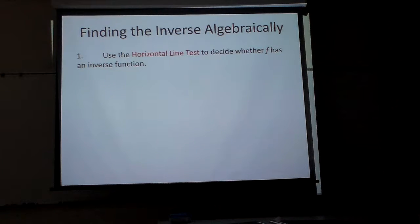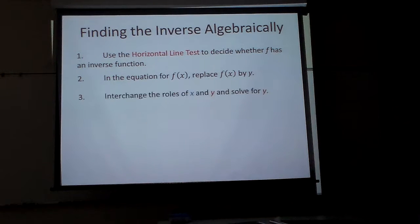First off, we have the horizontal line test to decide whether f has an inverse function. Because if it doesn't pass the horizontal line test, it does not have a function. In the equation f of x, I'm going to replace f of x with the letter y, because remember f of x is just the same thing as y. And then we interchange the roles of x and y and solve. We're going to switch x and y.